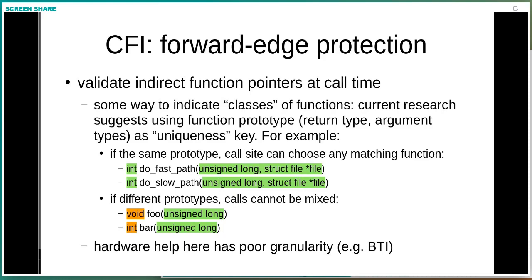In the foobar example, one returns void and one returns int, so in all places expecting to call a function that looks like 'foo', you cannot instead call 'bar'. The help from hardware is not great — BTI and nbranch things in existing CPU instruction sets just mark an entry point at all, so instead of calling any byte in the kernel you can call any function, which for most purposes doesn't really change an attacker's situation. Being able to only call matching function prototypes narrows the attack surface of what you can call pretty strongly.